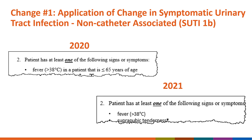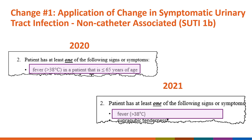Let's look at the first change as it applies to SUTI, where fever may be used as the only sign or symptom within the IWP to meet UTI for all ages. There is no longer an age restriction, with or without an IUC.